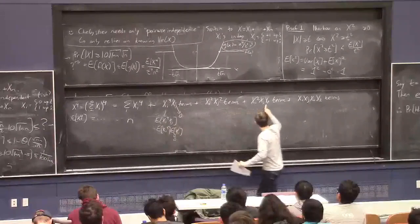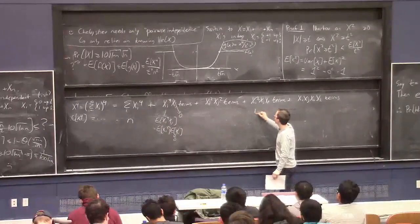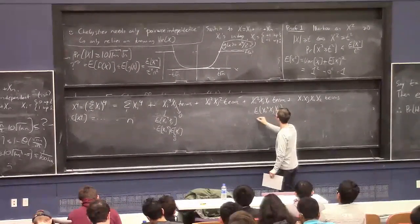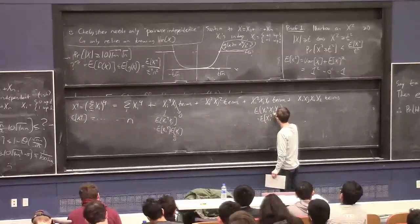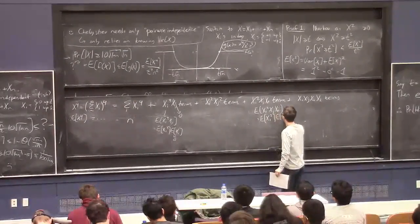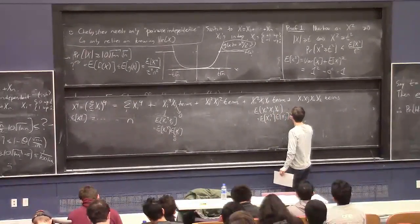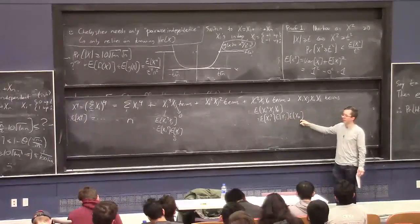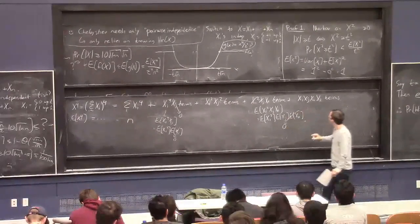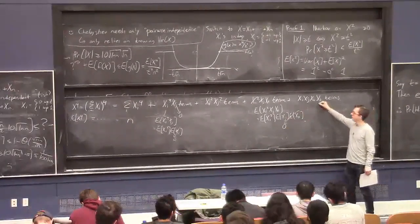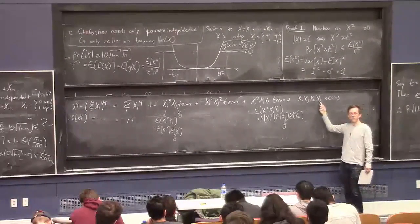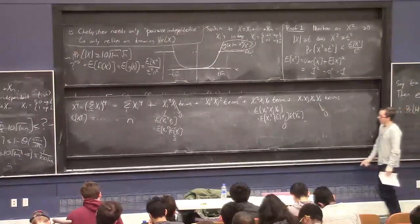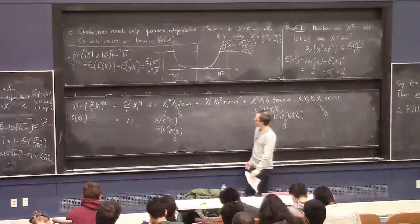Similarly, E[xi squared xj xk] by independence equals E[xi squared] times E[xj] times E[xk], and E[xj] equals 0. So all those terms vanish too. And the terms with xi xj xk xl are also 0 because there's at least one x to the power of 1. So a lot of stuff drops out — that's nice.